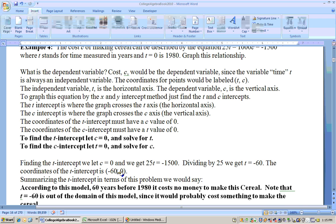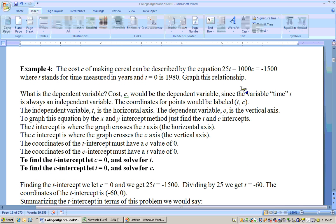Now, to get the Y intercept, you're going to substitute in zero for the X. To get the Y intercept, substitute in zero for the X. If I substitute zero in for the X, which is the T variable, I just end up with zero times 25 is zero. And I just have negative 1,000 C equals negative 1,500.